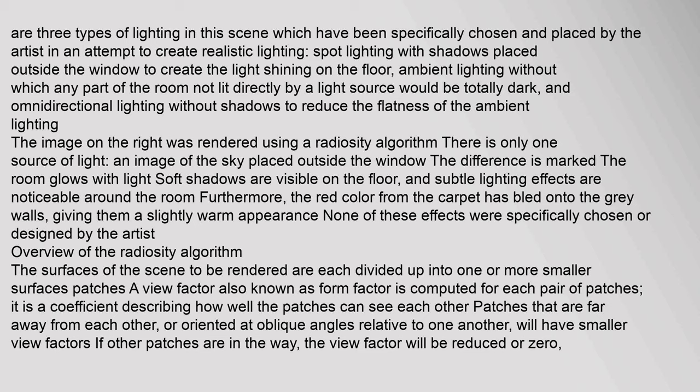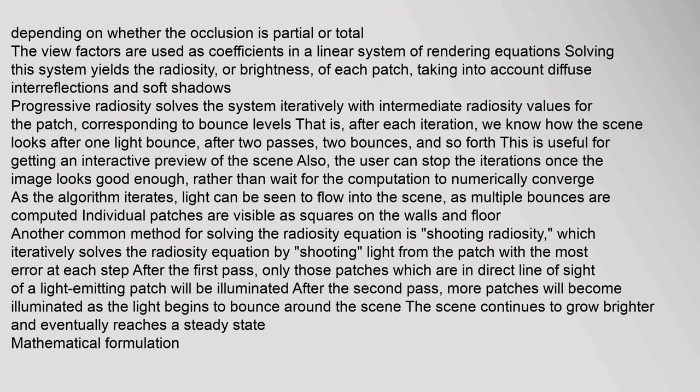Overview of the radiosity algorithm: The surfaces of the scene to be rendered are each divided up into one or more smaller surface patches. A view factor, also known as a form factor, is computed for each pair of patches. It is a coefficient describing how well the patches can see each other. Patches that are far away from each other or oriented at oblique angles will have smaller view factors. If other patches are in the way, the view factor will be reduced or zero depending on whether the occlusion is partial or total. The view factors are used as coefficients in a linear system of rendering equations.